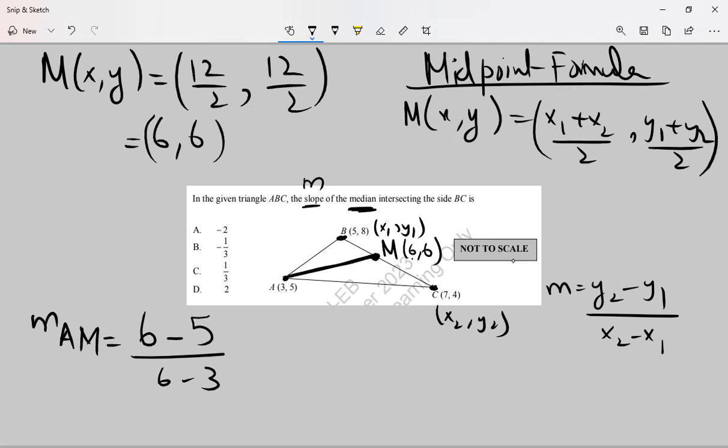This is the median. 6 minus 5 is 1, 6 minus 3 is 3. The correct answer is this one.